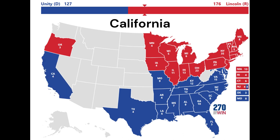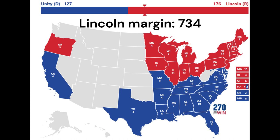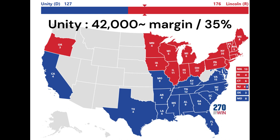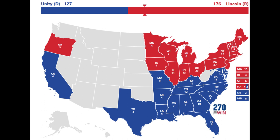The first is California with its four electoral votes. Lincoln only won the state by 734 votes over Douglas. On the other hand, with this unity ticket, Lincoln would have lost by just over 42,000 votes, or 35%. That places the electoral count at 127, still short by 25.